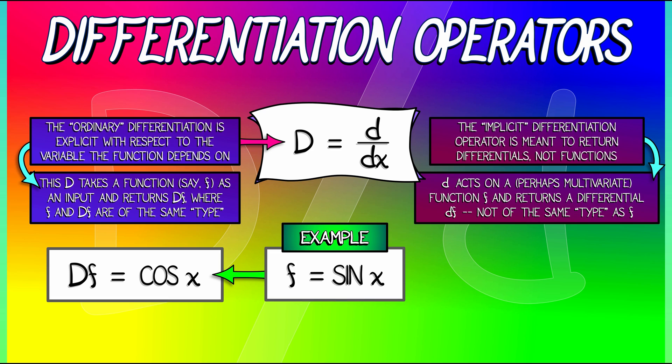For example, if I take that same function, f equals sin of x, and I hit it with the implicit differentiation operator, lowercase d, what do I get? I get df equals cosine of x dx. That implicit differentiation operator returns a differential. That is different than the function sine of x that I started off with.